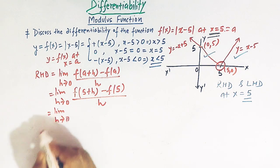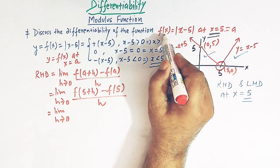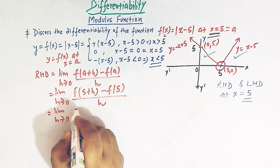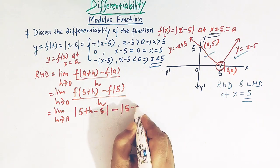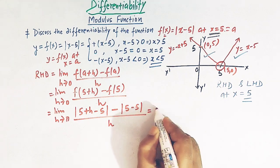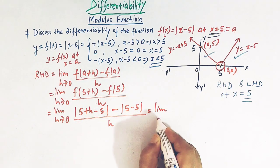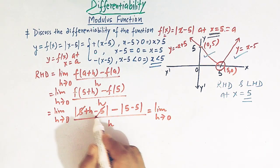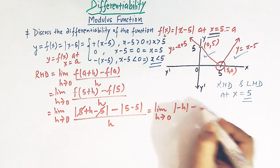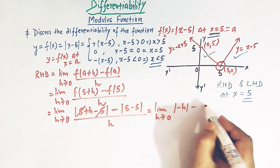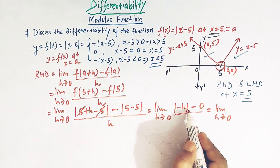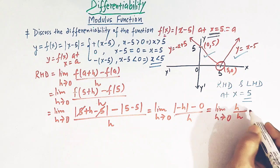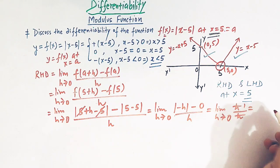f(5+h) is obtained by replacing x with (5+h), giving |5+h-5| = |h|. And f(5) = |5-5| = 0. So the limit becomes [|h| - 0] / h. Since |h| = h for h→0⁺, this simplifies to h/h = 1. So the right hand derivative equals 1.